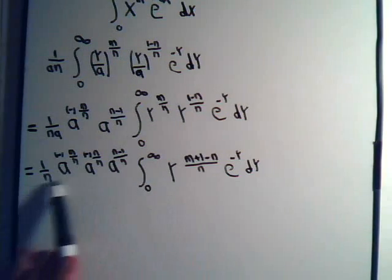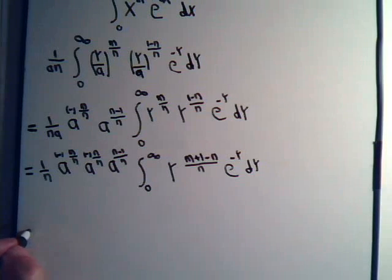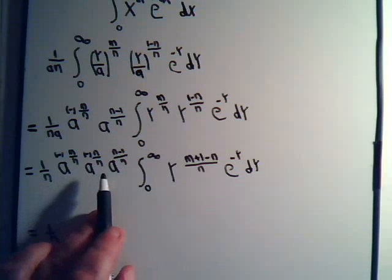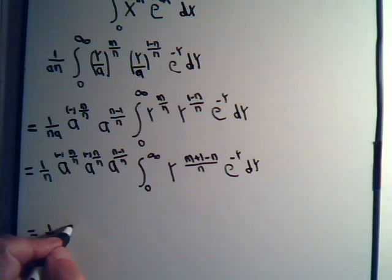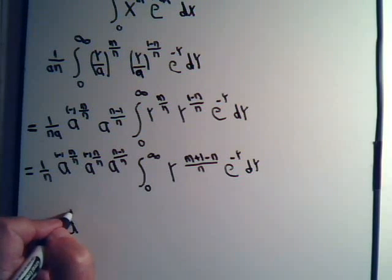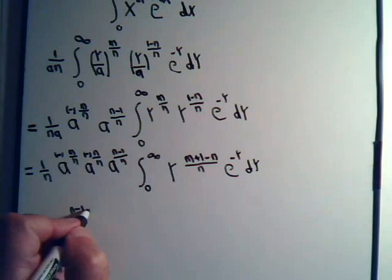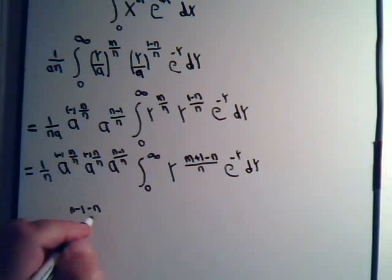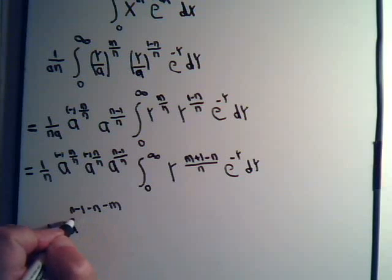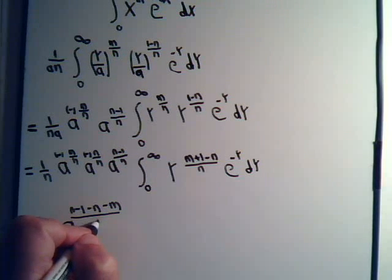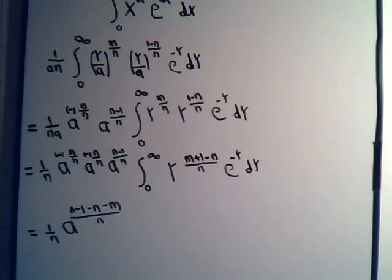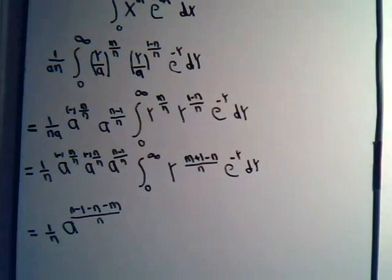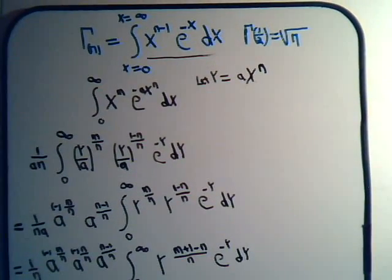We'll come back and think about this in a minute. Let's clear this up. This will equal 1 over n — here we have a constant n in the denominator — so this would be a to the n minus 1 minus n minus m, divided by n. And what about this integral? We're thinking, obviously, in terms of gamma function type integrals, and we should remember how this works out.